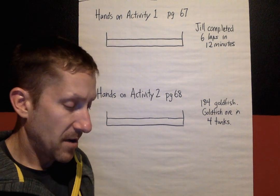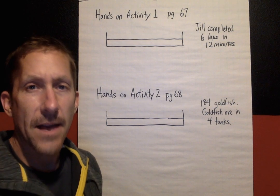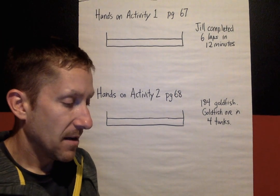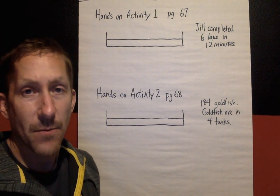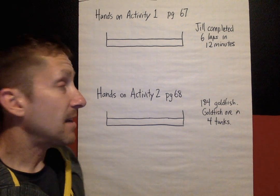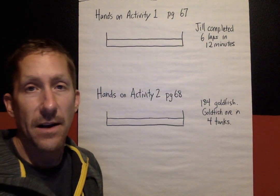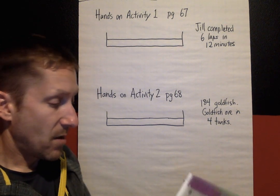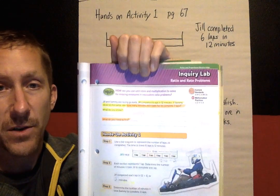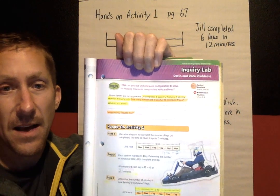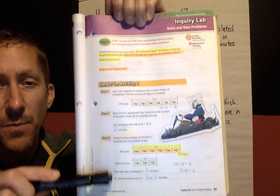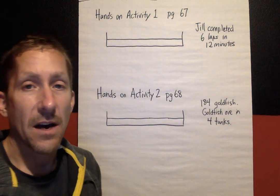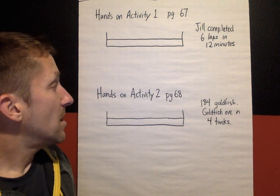Hi there, this is Mr. Bickford. This video is an explanation of how to do the Inquiry Lab that is on page 67. It's Inquiry Lab: Ratio and Rate Problems. You do not have to take these notes that I'm walking through. If you'd like to write them down separately, you sure can, but most of you should just go to page 67 in your book. I'm also going to be working through hands-on activity number two on page 68.